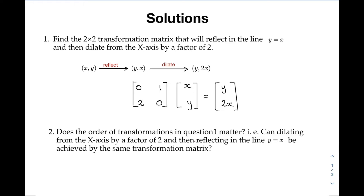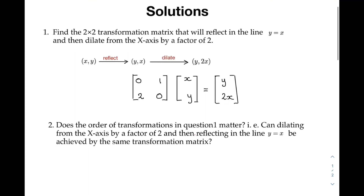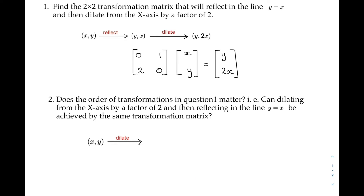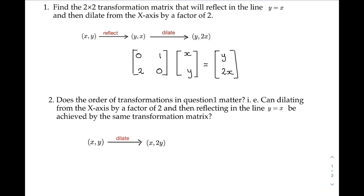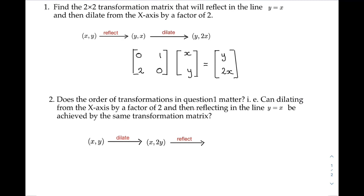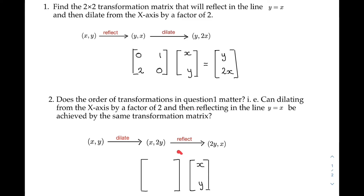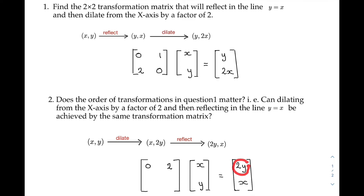Similarly with the second question, when xy is dilated by a factor of 2 from the x-axis it becomes x and 2y, and then reflecting in the line y equals x we have 2y and x. We consider what matrix will produce this result: 0, 2 in the first row gives 0x's and 2y's for the first entry, and 1, 0 in the second row gives 1x and 0y's for the second entry, giving us the same results as the previous method.